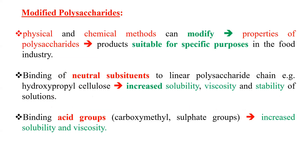Modified polysaccharides are prepared to suit particular food products. A number of physical and chemical methods can modify the properties of polysaccharides for specific purposes in the food industry. Binding of neutral substituents to a linear polysaccharide chain — for example hydroxypropyl cellulose — increases solubility, viscosity and stability of the solution. Similarly, binding of acid groups such as carboxymethyl and sulfate groups is also responsible for increased solubility and viscosity.